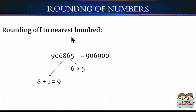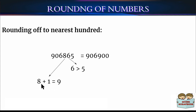If we have 96,865, what would the number be after rounding off to the nearest 100? It has 6 in its 10's place and 6 is greater than 5. So we increase the 100's place by 1 and replace the digits in the 10's and 1's place by 0's. The answer is 96,900.